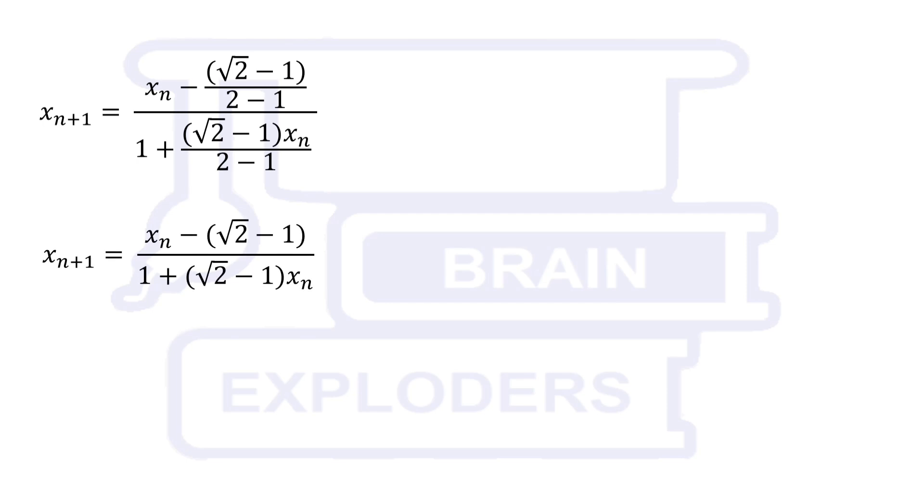Root 2 minus 1 is equal to tan pi by 8. Let us assume that Xn is equal to tan yn. These two equations make the solution much simpler.